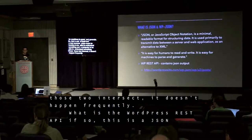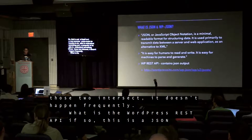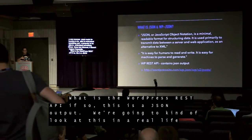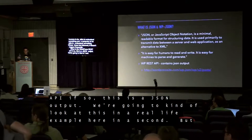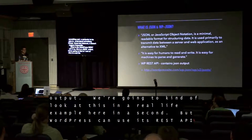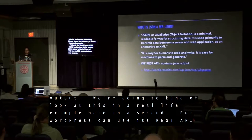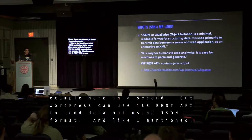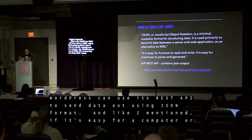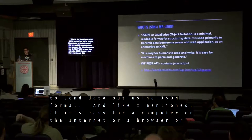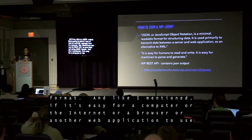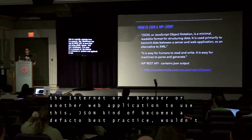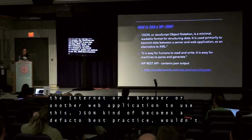What is the WordPress REST API? So this is a JSON output. We're going to look at this in a real life example in a second, but WordPress can use its REST API to send data out using JSON format. And like we mentioned, if it's easy for a computer, browser, or another web application to use this, JSON kind of becomes a de facto best practice.